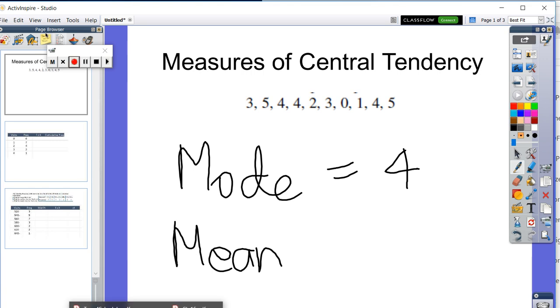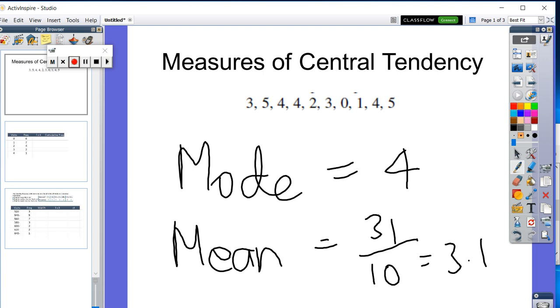So let's see if, if we look at this, if we add it up three plus five plus four, four, three, two, three, zero, one, four, five. That actually adds up to 31 but we then need to divide it by the number of records there are. 31 divided by 10 would then equal 3.1.